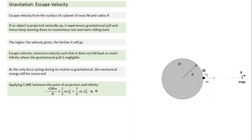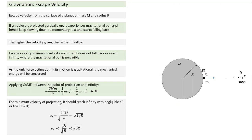If we give velocity greater than escape velocity, it will reach infinity with non-zero velocity. If velocity is exactly equal to escape velocity, it reaches infinity with zero kinetic energy. The formula comes to √(2GM/R), and multiplying by R/R, GM/R² becomes g — valid for Earth and corresponding values for any other planet. In terms of density, escape velocity is proportional to √(ρ) times R.